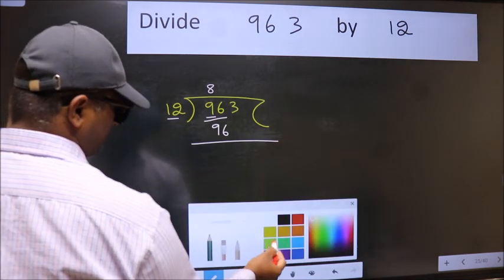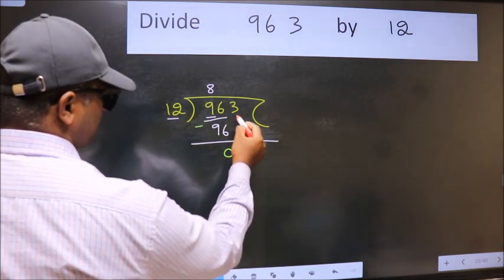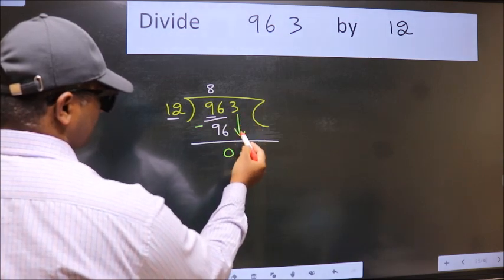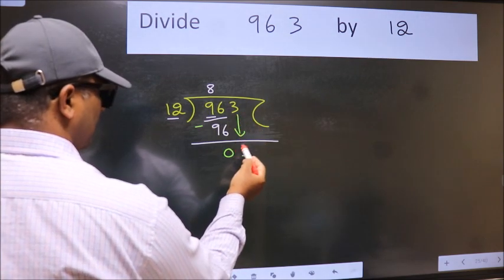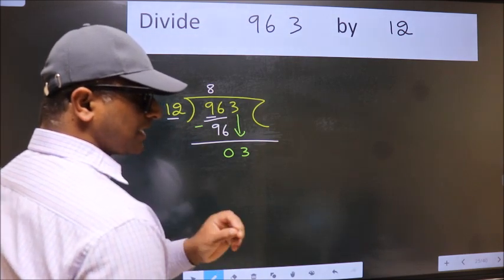Now we should subtract. We get 0. After this, bring down the beside number. So 3 down. After this step, the mistake happens and the mistake is this.